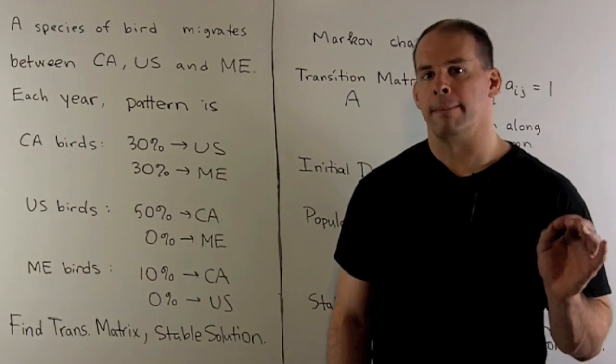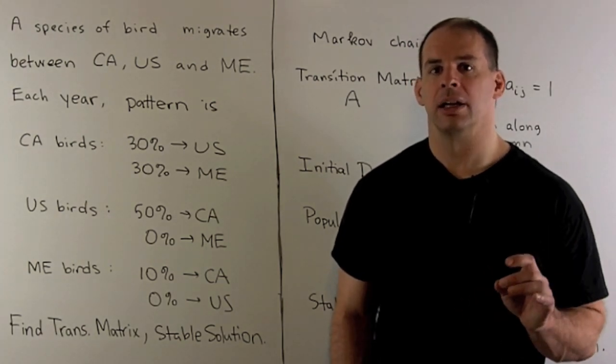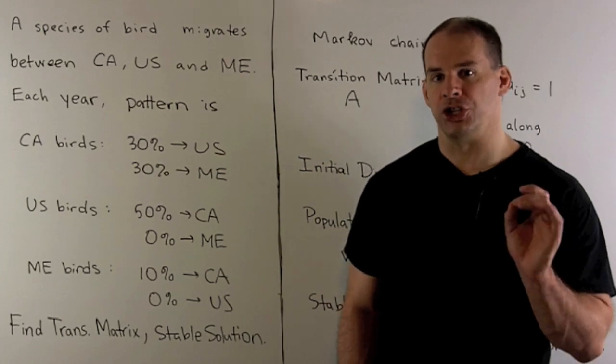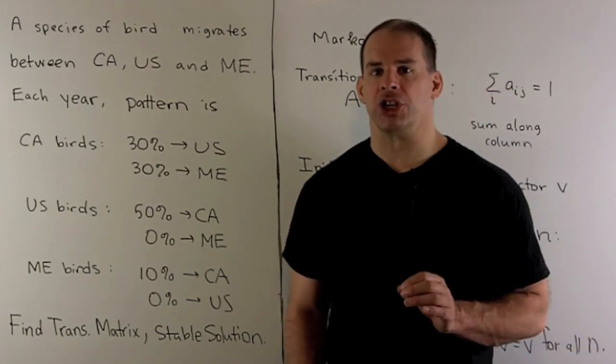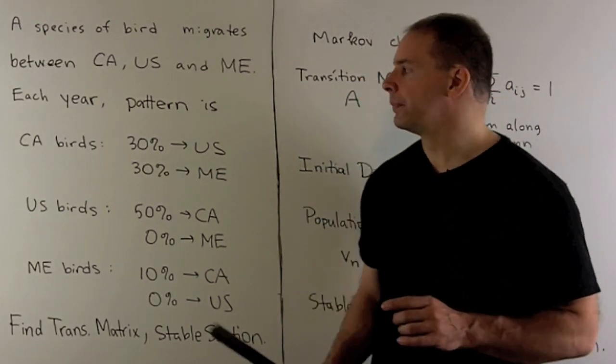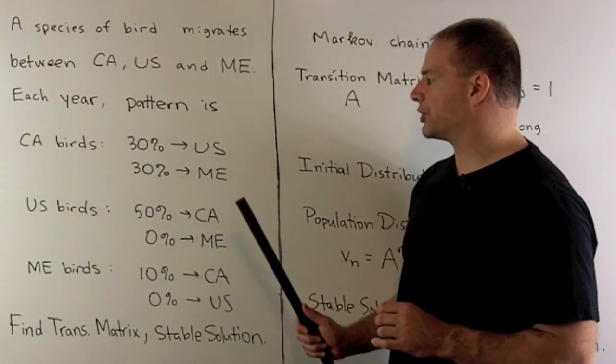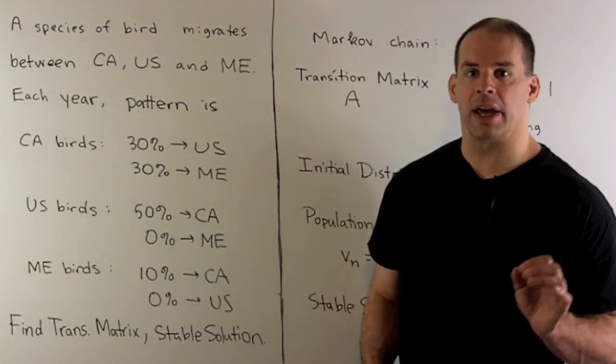A species of bird migrates between Canada, the United States, and Mexico. Each year, a pattern of migration is given by: For the Canadian birds, 30% go to the US, 30% go to Mexico, the rest stay home.